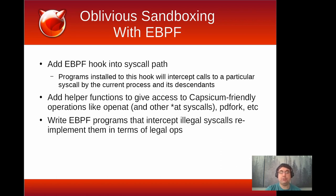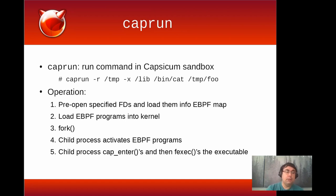With these two pieces of infrastructure, I can write eBPF programs in C that intercept illegal syscalls — syscalls that Capsicum won't let you have — and re-implement them in terms of legal ops. I call this interception and re-implementation 'rewriting' a syscall. This allows me to rewrite any syscall made by any binary, regardless of ABI, whether statically or dynamically linked, to be Capsicum-legal — and therefore run any binary in a Capsicum sandbox. I've written a small program called CapRun that runs a specified command in a sandbox with access to whatever paths you want to give it.